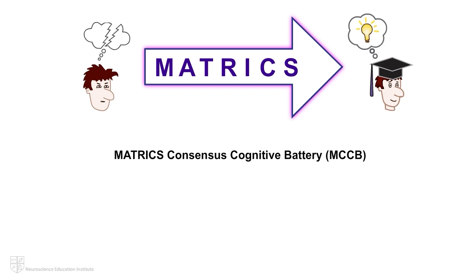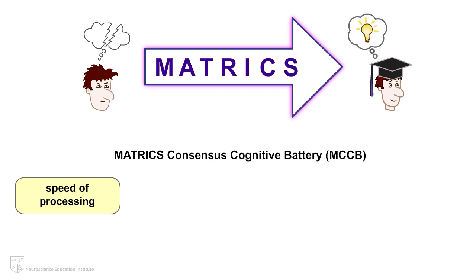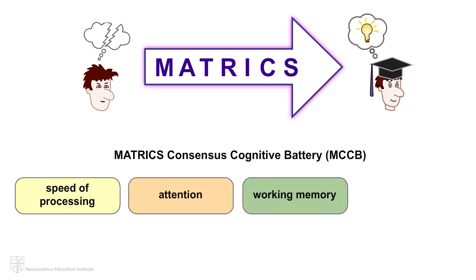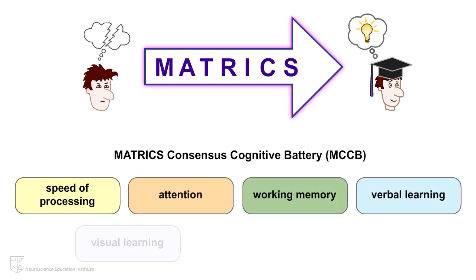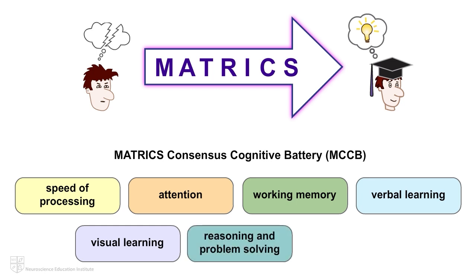The MCCB includes 10 tests that measure 7 cognitive domains commonly impaired in patients with schizophrenia, including speed of processing, attention, working memory, verbal learning, visual learning, reasoning and problem solving, and social cognition.